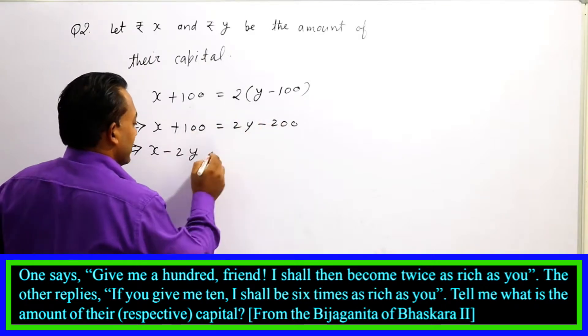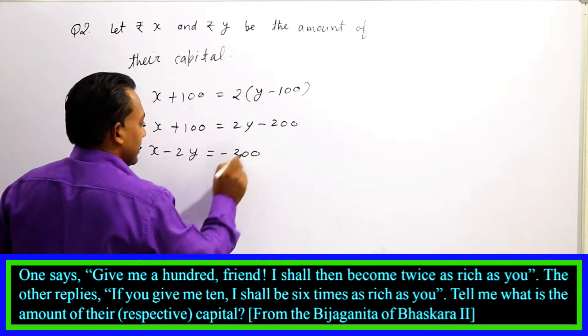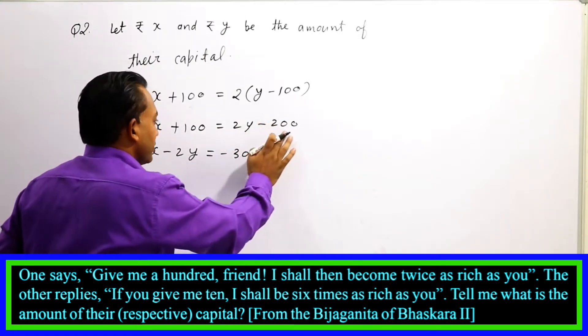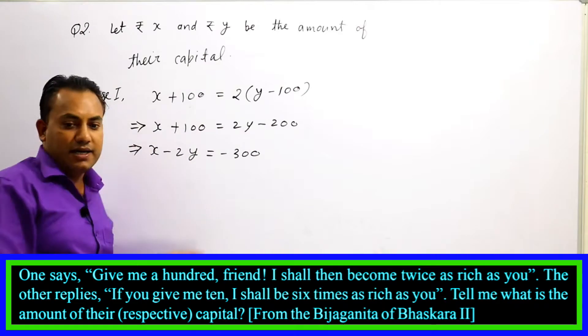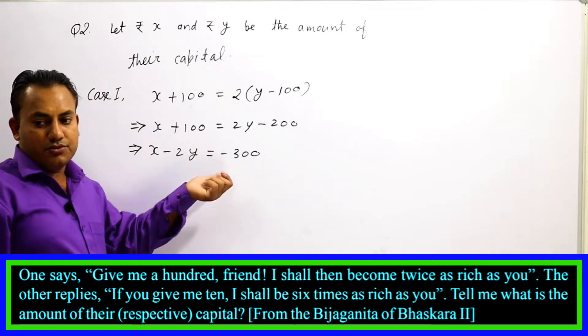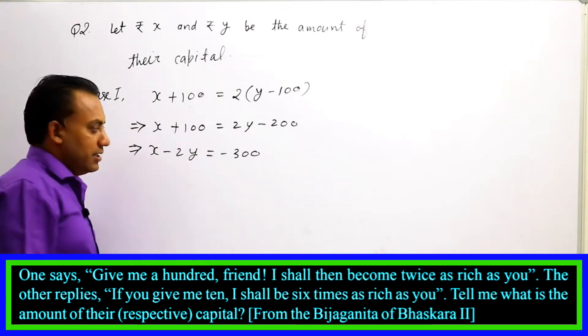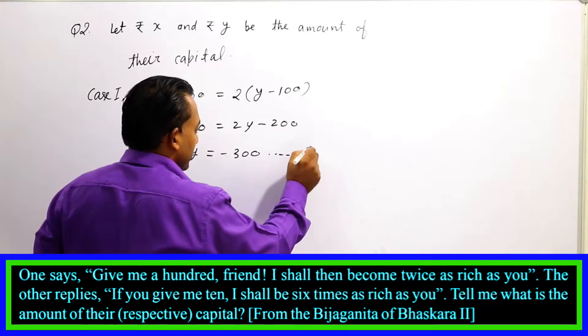Bringing all terms to one side: minus 200 comes here and minus 100 adds, giving minus 300. So our first equation is: x - 2y = -300.